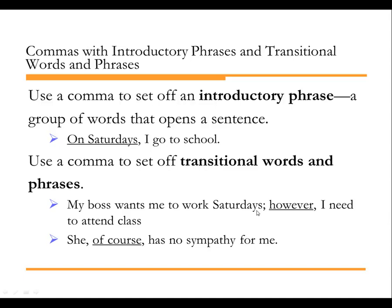You also use commas to set off transitional words. In our work with compound sentences and semicolons, we learned that when you have two independent clauses, a semicolon goes between them. But because you're beginning the second independent clause with a transition word, you put a comma after it. Transitional words and phrases will have commas around them. If the transitional word or phrase starts a new sentence, you'll use a semicolon — but just because you have a transitional word or phrase doesn't mean there's always a semicolon. You wouldn't put a semicolon if it's not connecting two complete sentences.